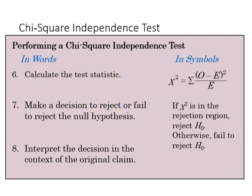Calculate our test statistic, and there's our equation to calculate the test statistic. Based on what that statistic is relative to our rejection region, we will determine whether or not we reject the null or fail to reject the null, and then we interpret the original claim in that context.